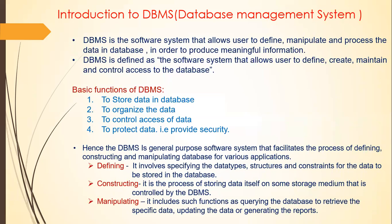Student information stored in different tables — student contact data in one table, student personal information in another table, student qualification details in another table. We can combine all three tables into a single database and get the particular information needed. From student personal information we get the student name, from contact information we get the mobile number, and from qualification detail we get the percentage. In another definition, the DBMS is the software system that allows the user to define, create, maintain, and control access to the particular database.